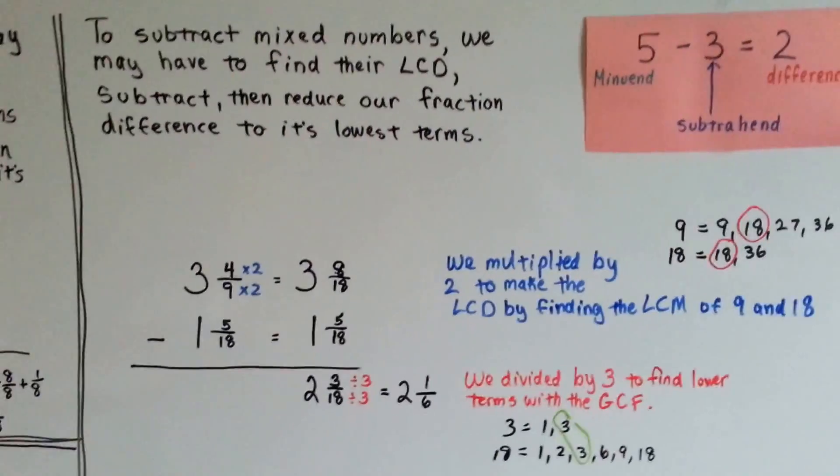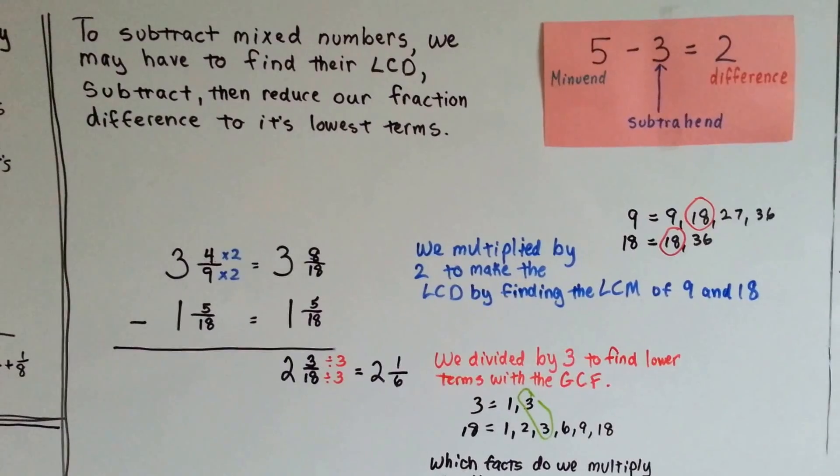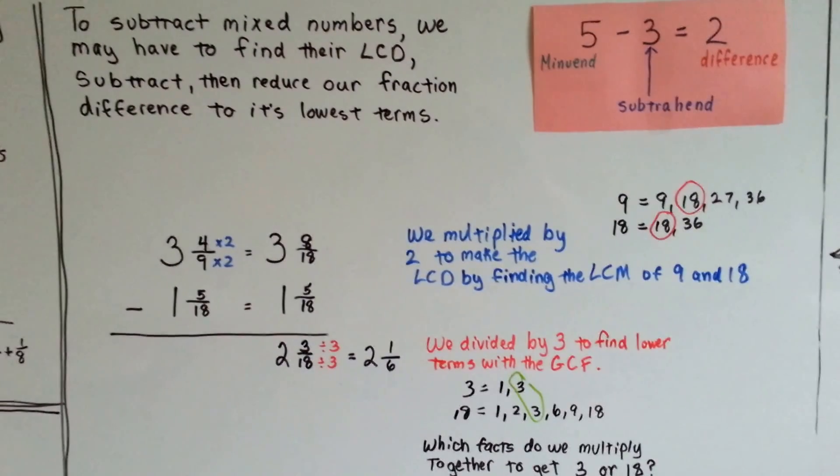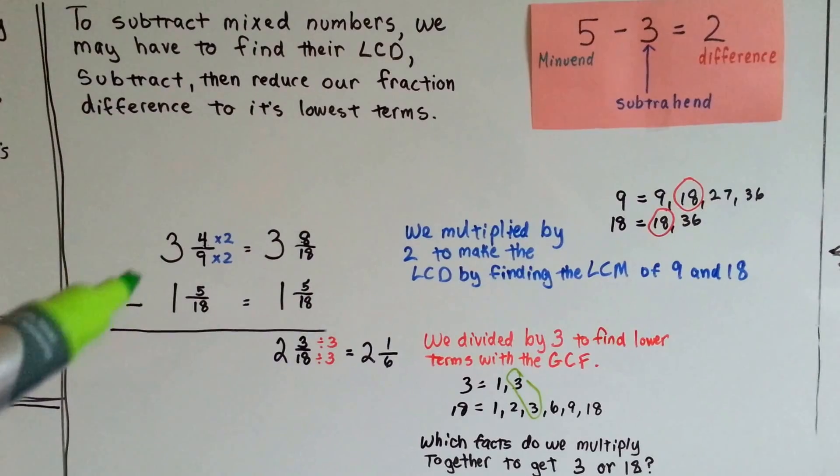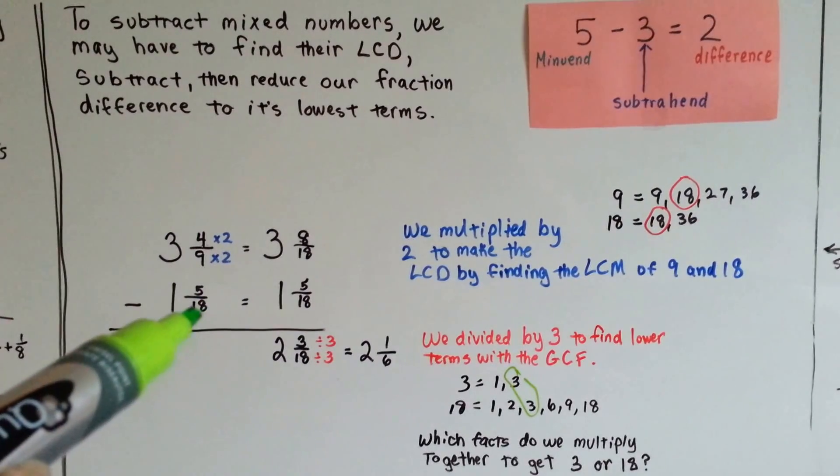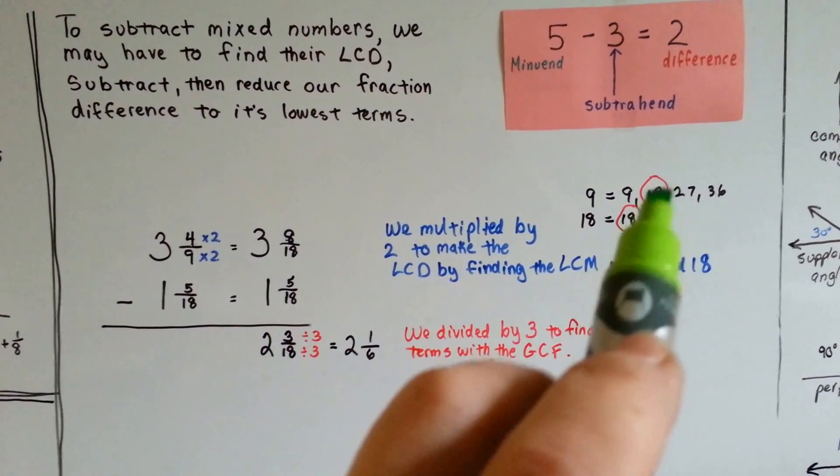To subtract mixed numbers, we may have to find their lowest common denominator, subtract, and then reduce the fraction's difference to its lowest terms. For three and four-ninths, we can't subtract one and five-eighteenths from it, because the denominators are different. We list their common products. We see they can meet at eighteen. That's the lowest.